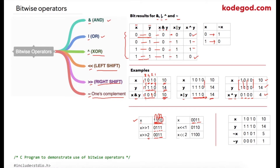The exact opposite happens for the left shift operator. Assuming x is 0011, if we apply left shift by one, the last three digits shift to the left, forming 0110, and we add zero on the last position. Similarly, when we apply left shift by two, two bits shift to the left and the remaining bits are replaced with zeros. That is how the left and right shift operators work.